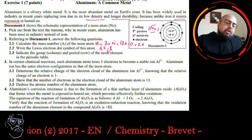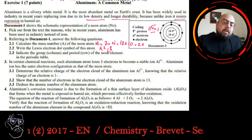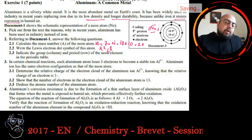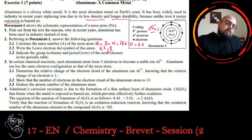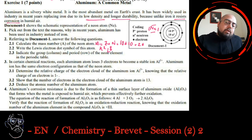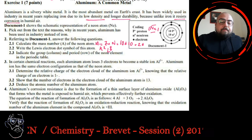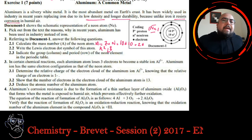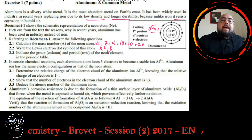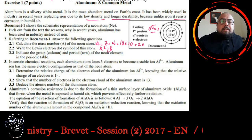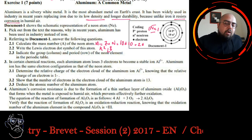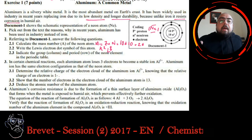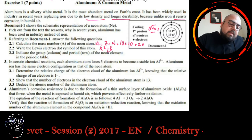In certain chemical reactions, each aluminum atom loses 3 electrons to become stable ion Al3+. Aluminum ion has the same electron configuration as that of the neon atom. Determine the relative charge of the electron cloud of the aluminum Al3+, knowing that the relative charge of an electron is 1 minus. Al3+ has the same configuration as neon. It means that it has the same number of electrons as neon. It has 10 electrons. In the electron cloud of the aluminum ion, it has 10 electrons. The relative charge will be 10 minus.